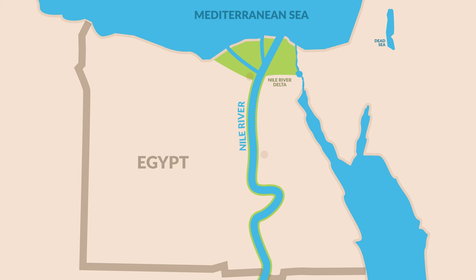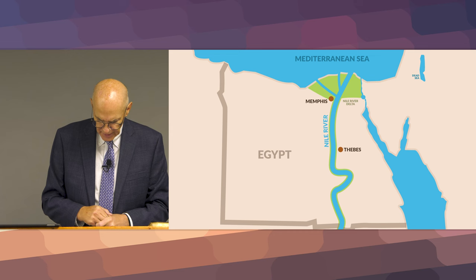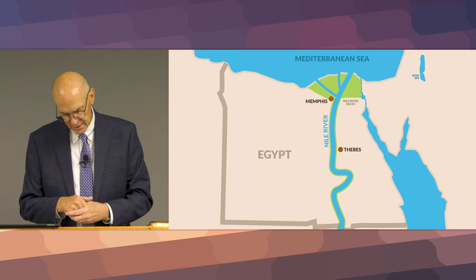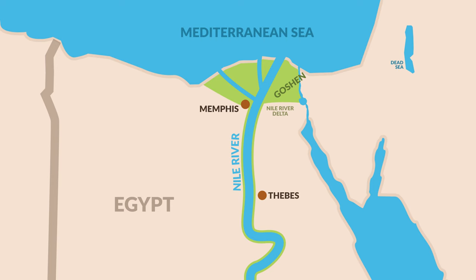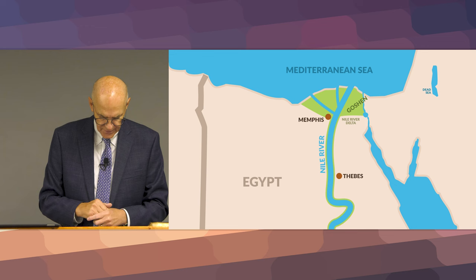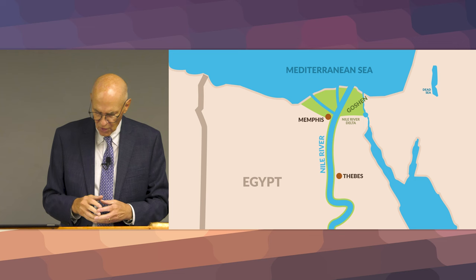Memphis was the capital city during the old kingdom period, and we'll talk about the various periods in ancient Egypt. Thebes was the capital during the new kingdom. The land of Goshen, where Jacob and his family lived, is located in the northern, northeastern part of the Delta. Egypt's geography largely protected it from enemy attack.